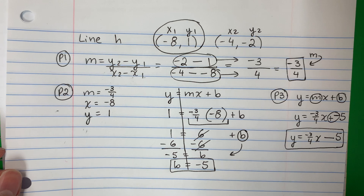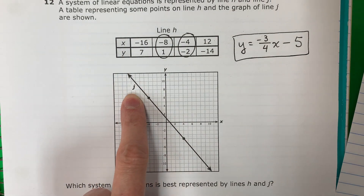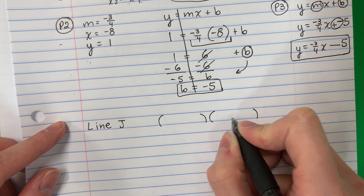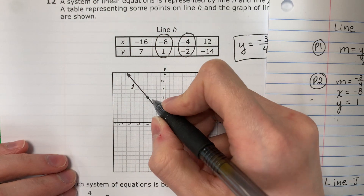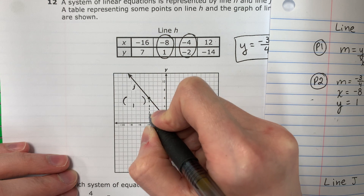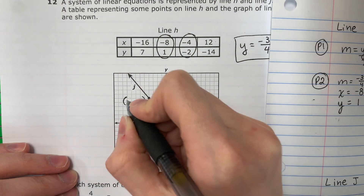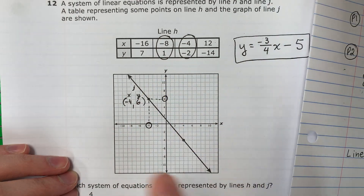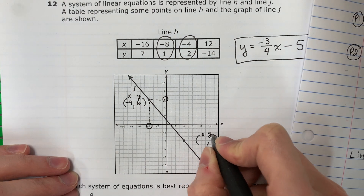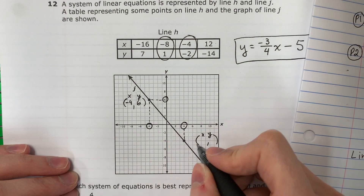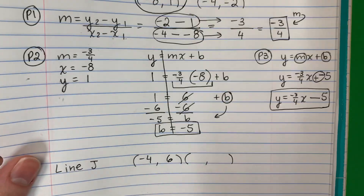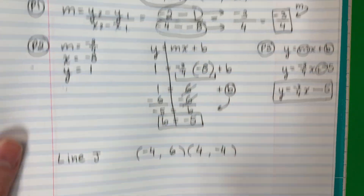Now we're going to do this process again for line J. I need two ordered pairs from the graph. Here's one point: X is negative four, Y is six — so negative four, six. And another one: X is four, Y is negative four — so four, negative four.